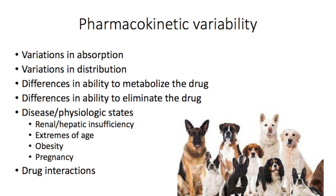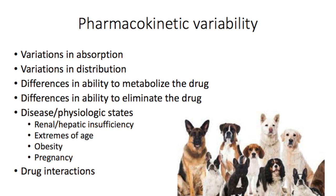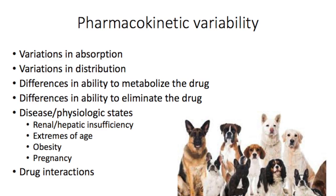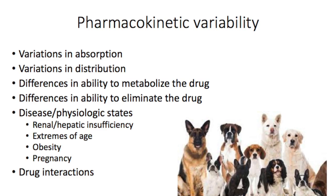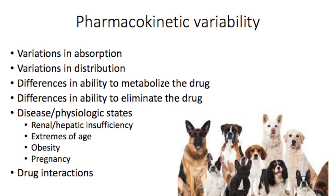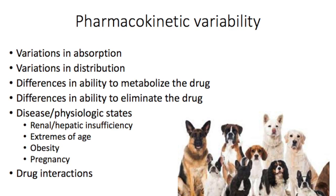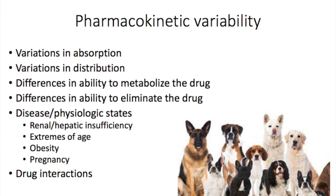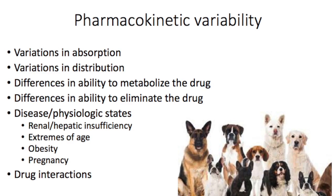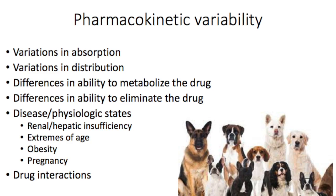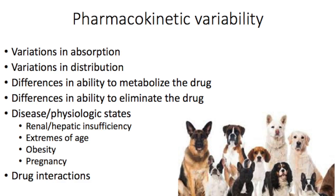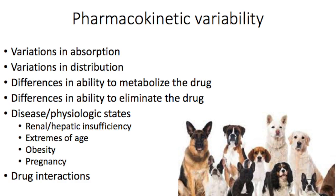This isn't surprising to us at all as veterinarians if we look at the wide range of different phenotypes and breeds that occur just within a single species like dogs. Furthermore, disease and altered physiologic states like renal and hepatic insufficiency, extremes of age, obesity, and pregnancy can change any one or more of the pharmacokinetic processes within an individual over its lifetime.